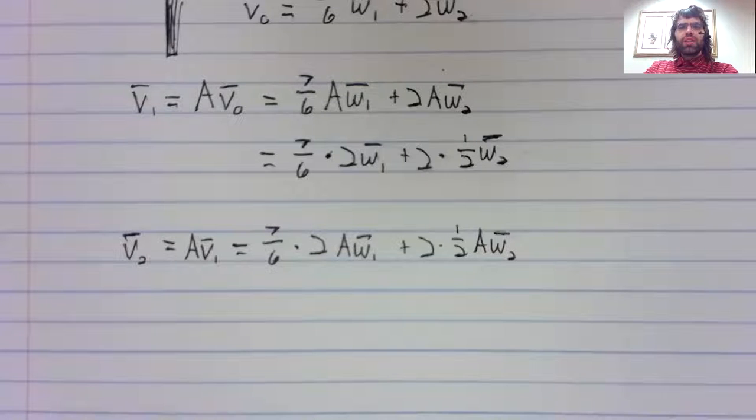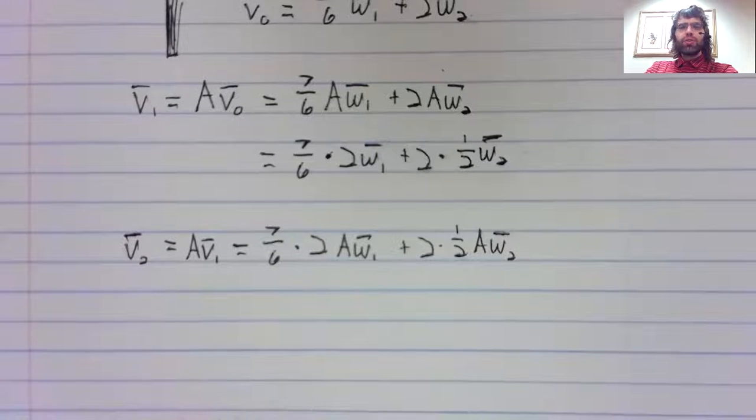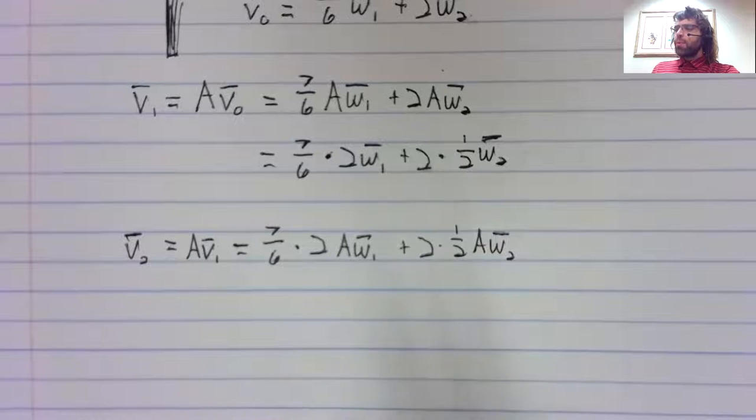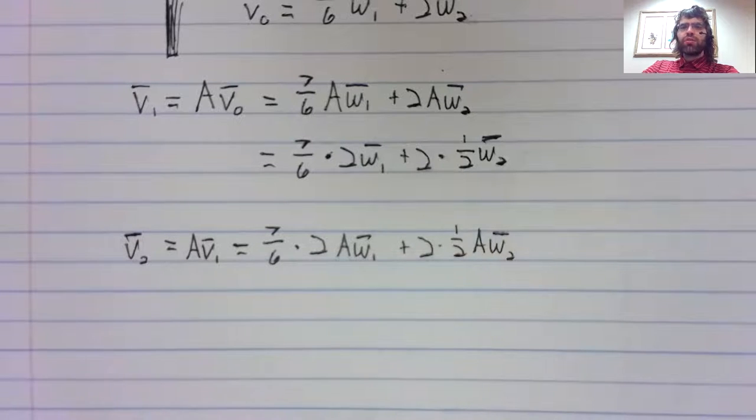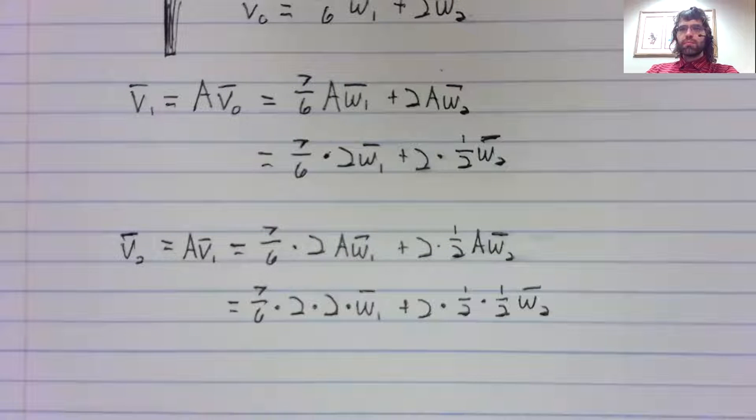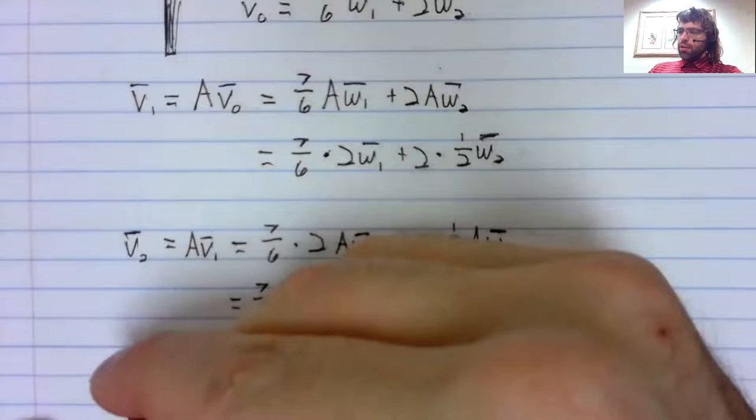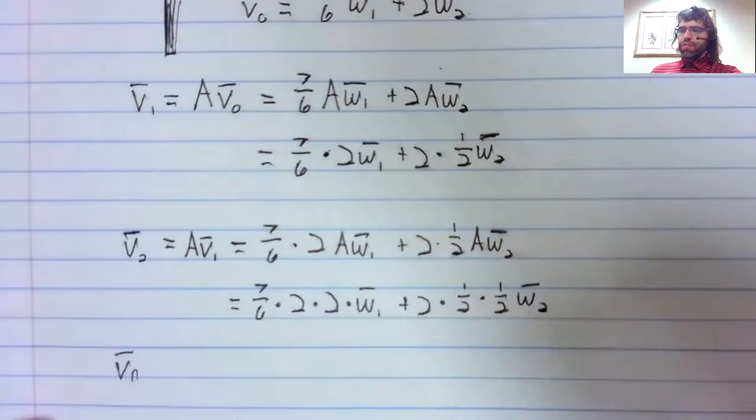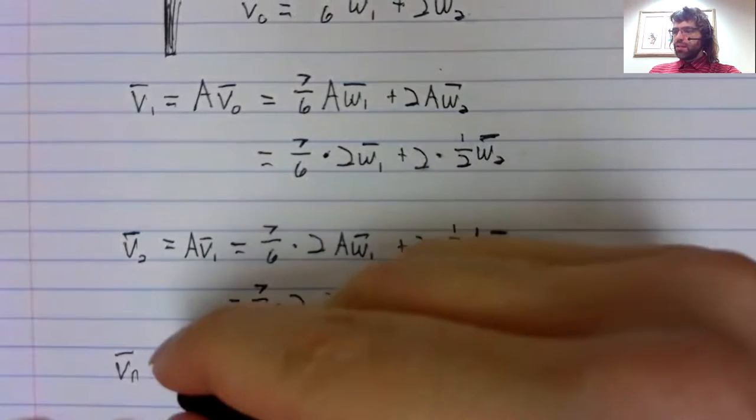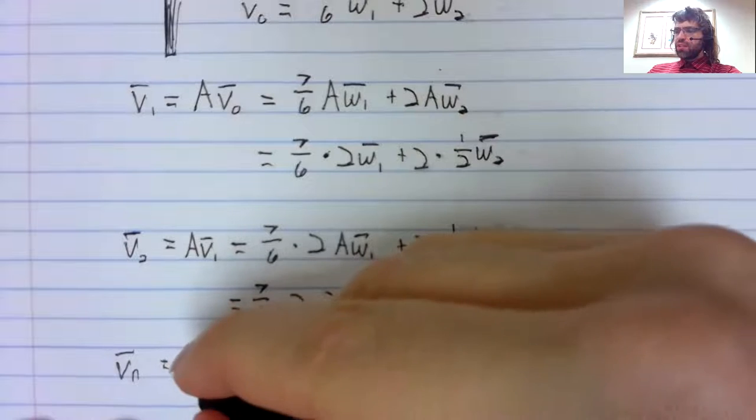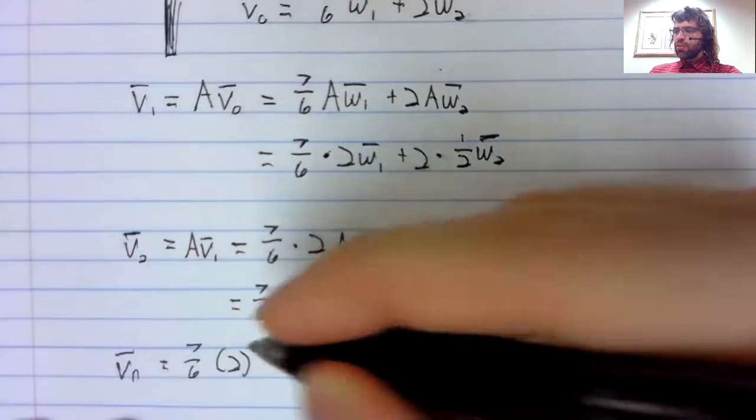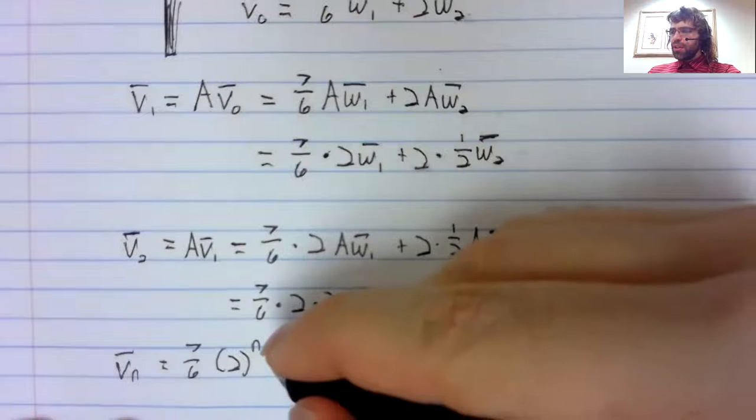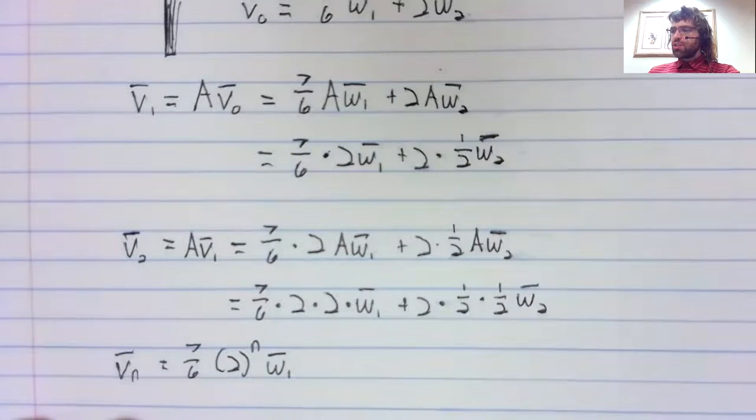Once again, multiplication distributes over addition. Once again, we have matrices times eigenvectors. In general, V_n is going to be seven sixths times this eigenvalue to the n times this eigenvector.